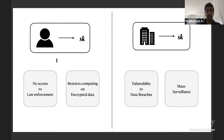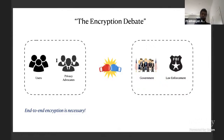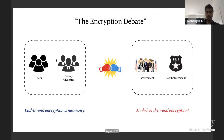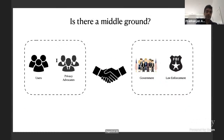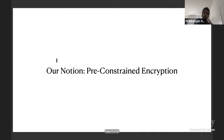Another issue is that law enforcement agencies could force the organization to reveal secret keys, enabling mass surveillance. This has led to the encryption debate: on one side, users and privacy advocates want end-to-end encryption; on the other, senators, congresspeople, and law enforcement want to abolish it. Is there a middle ground? We propose the notion of pre-constrained encryption as a baby step.